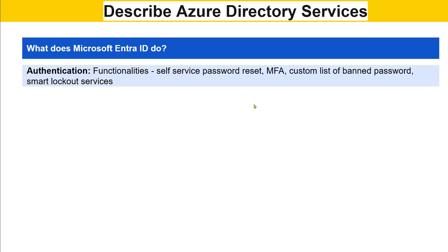Using Microsoft Entra ID, the first functionality is authentication. You can enable self-service password reset — so the user doesn't have to call IT support to reset their password. There's also multi-factor authentication, recognizing through face ID, a custom list of banned passwords, and smart lockout services — after you have entered the password wrongly a couple of times, your account gets blocked.